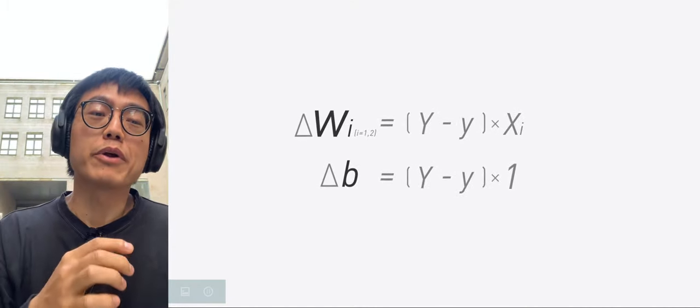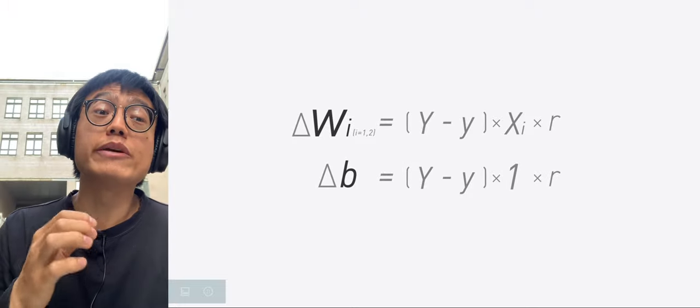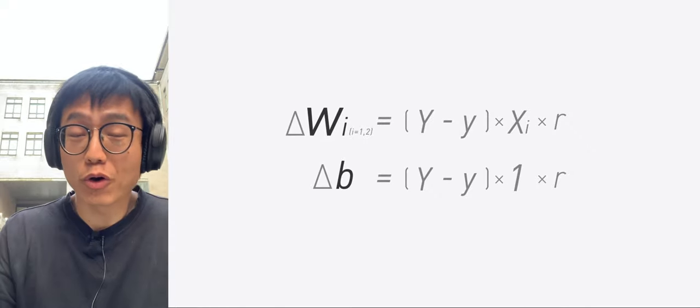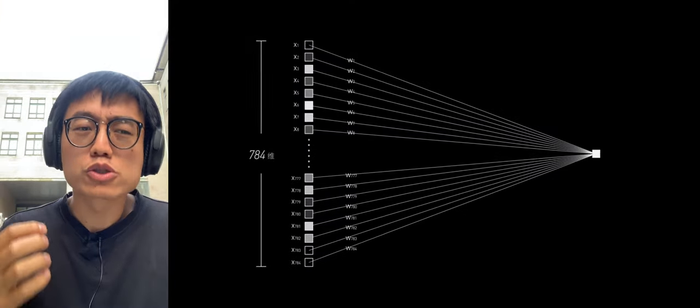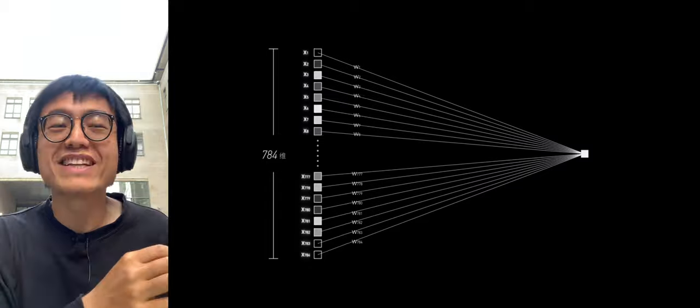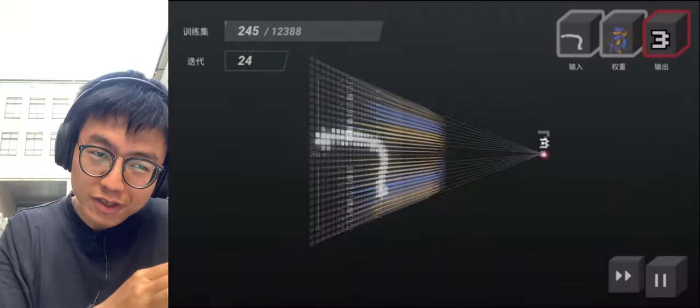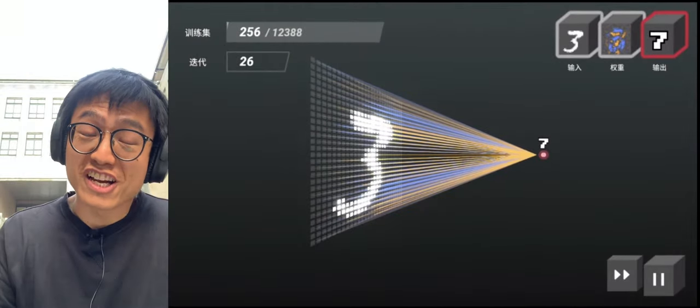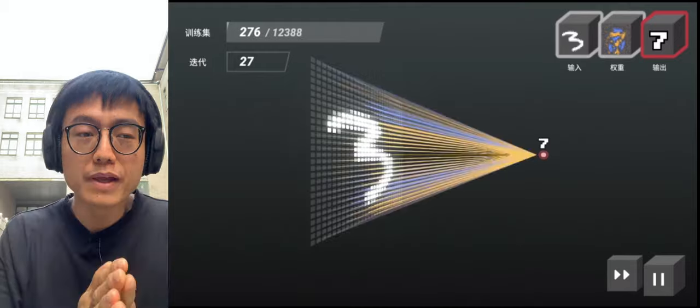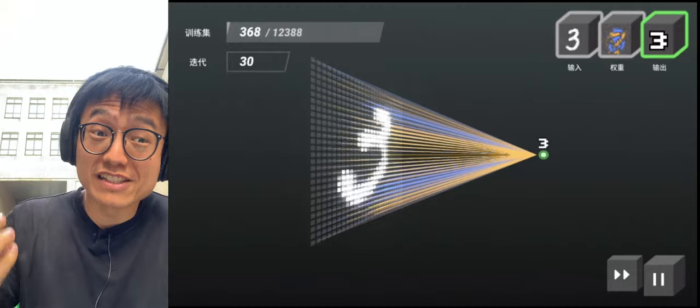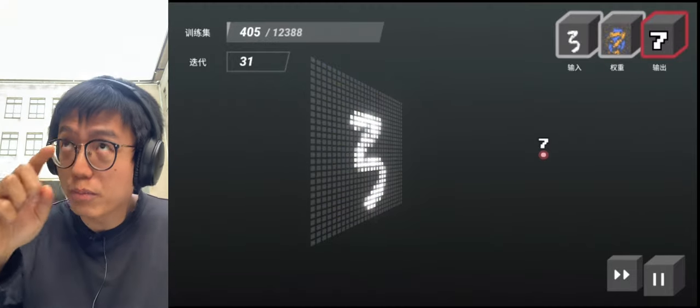Finally, delta W and delta B are usually multiplied by another R. We will continue to talk about it later in the story. The model we used to train our machine to recognize numbers in the last episode used this simple algorithm. As long as our machine judgment is wrong, the 784 weights will be automatically adjusted plus a delta Wi. As the number of iterations increases, the machine's recognition of numbers will become more and more accurate.